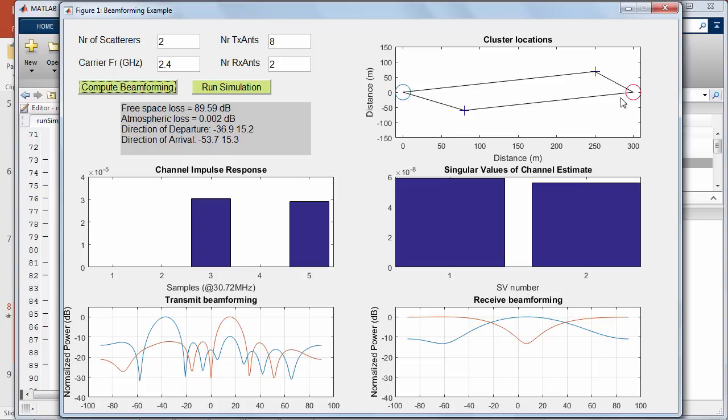The transmitter and receiver are separated by 300 meters. The free space loss is about 90 dB. The channel impulse response has two paths, each corresponding to one of the scatterers,